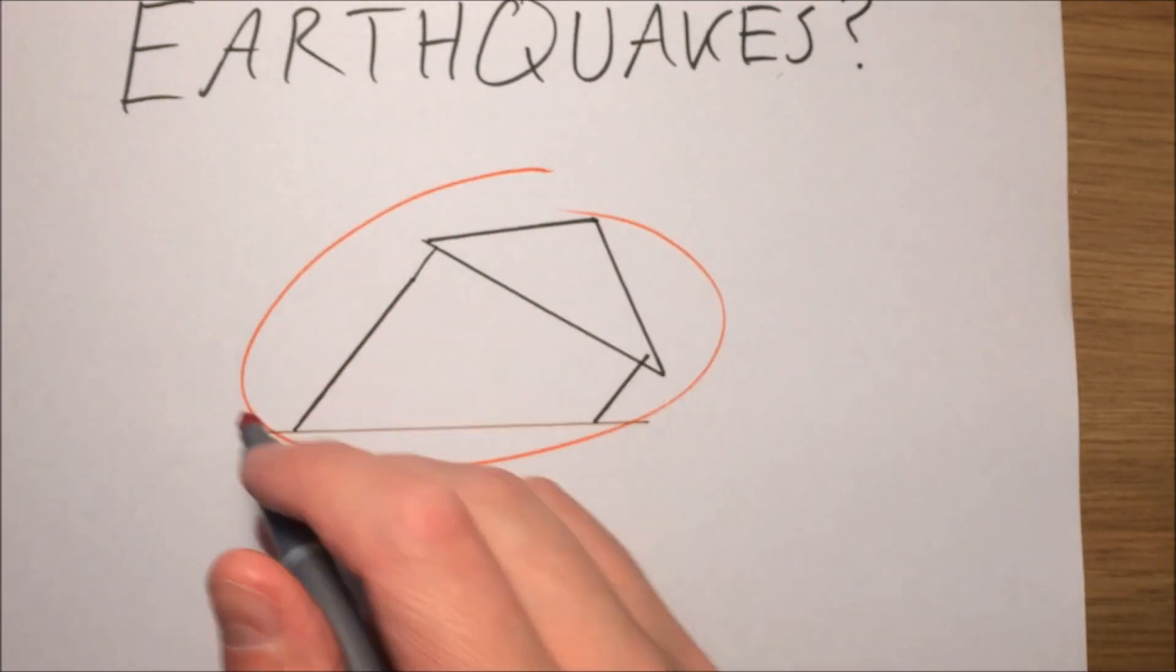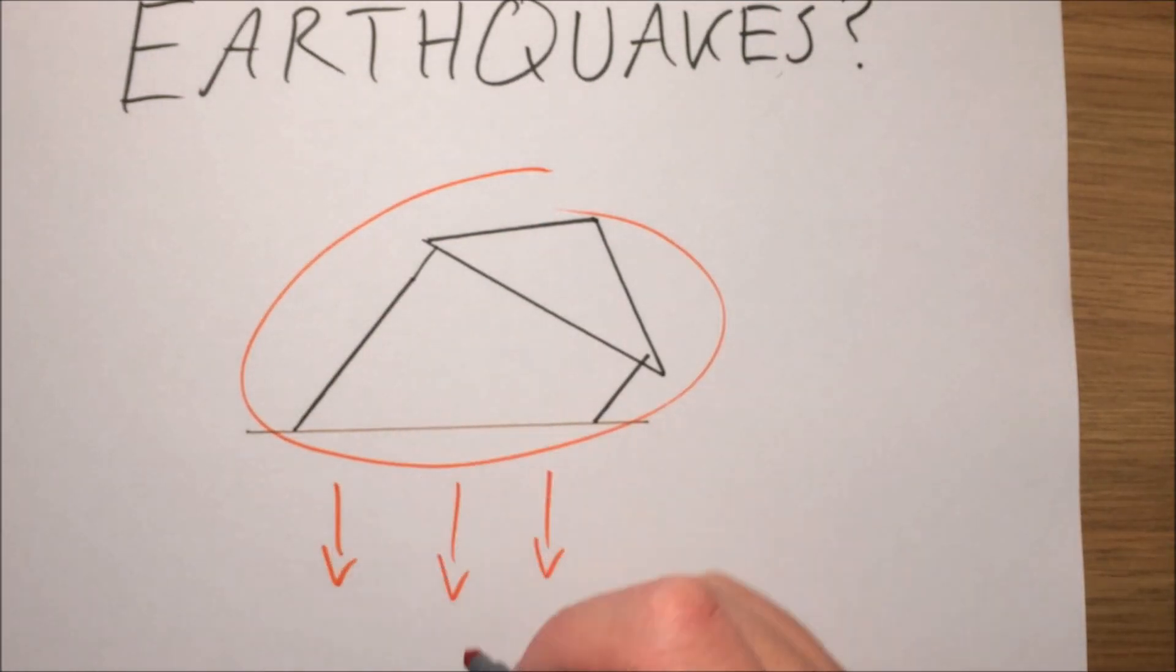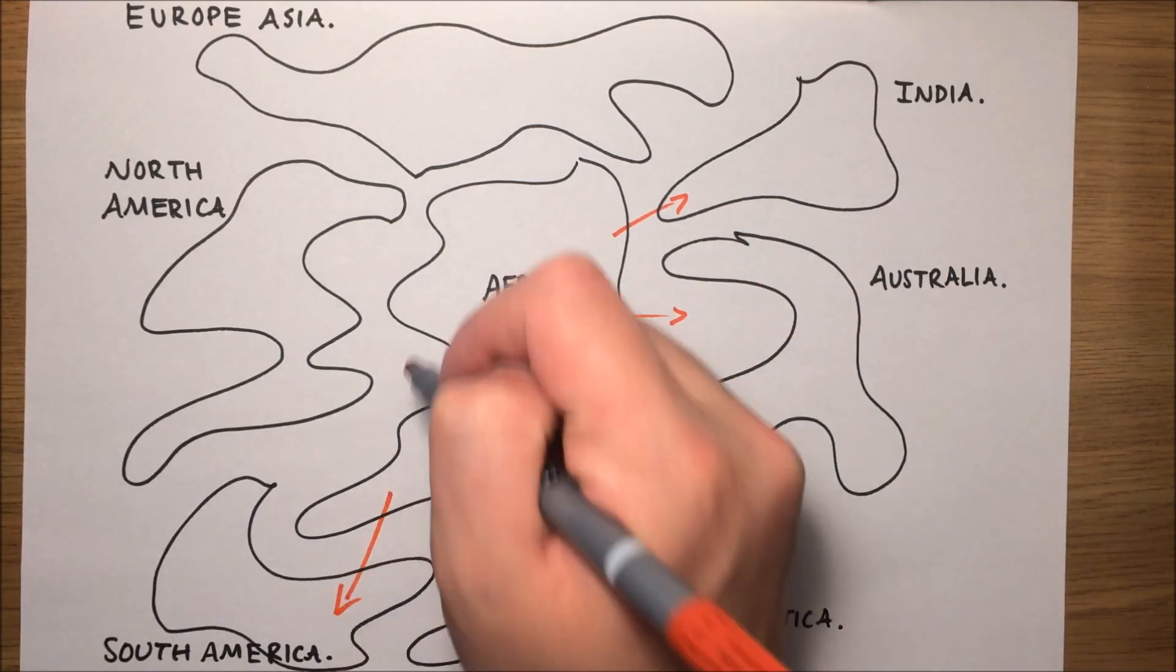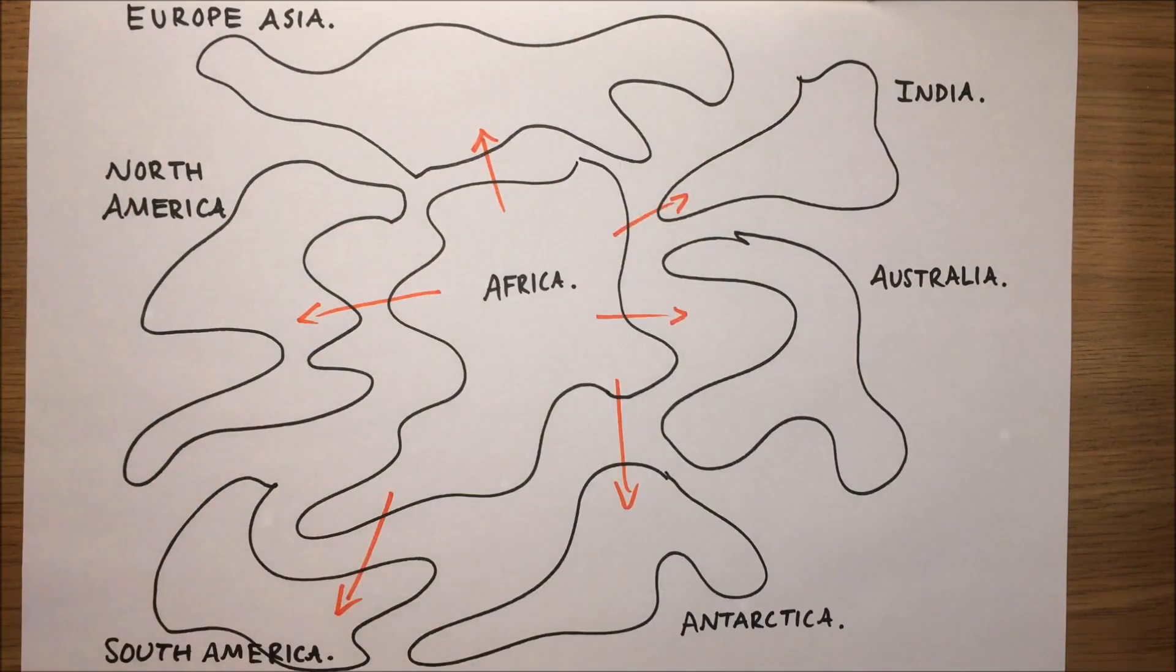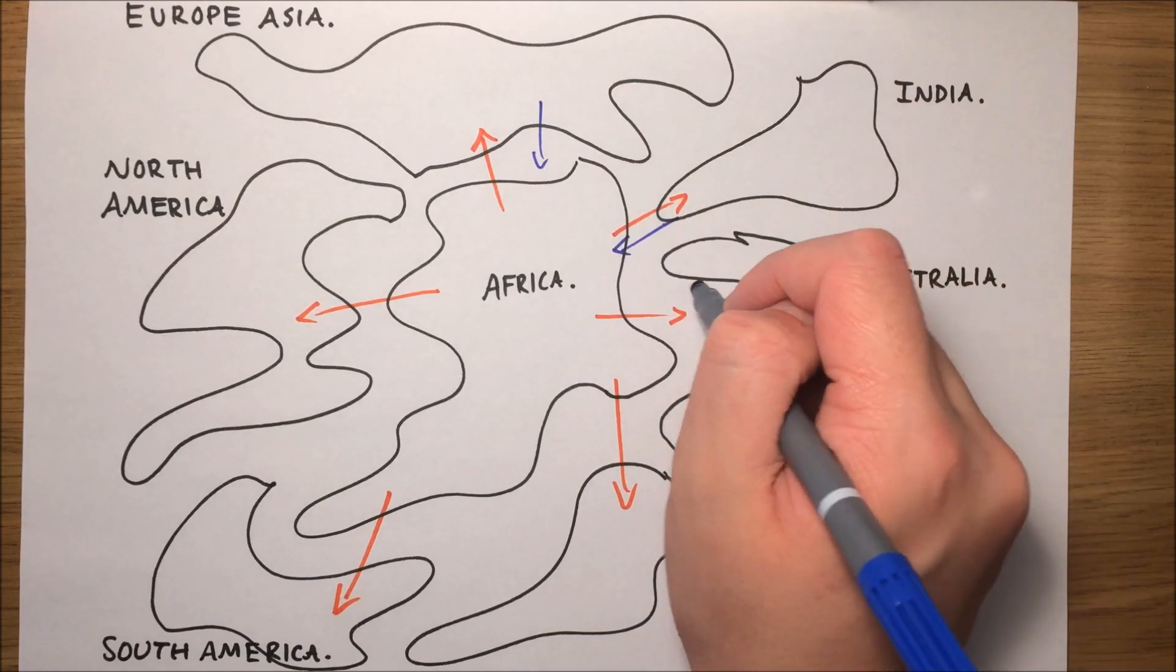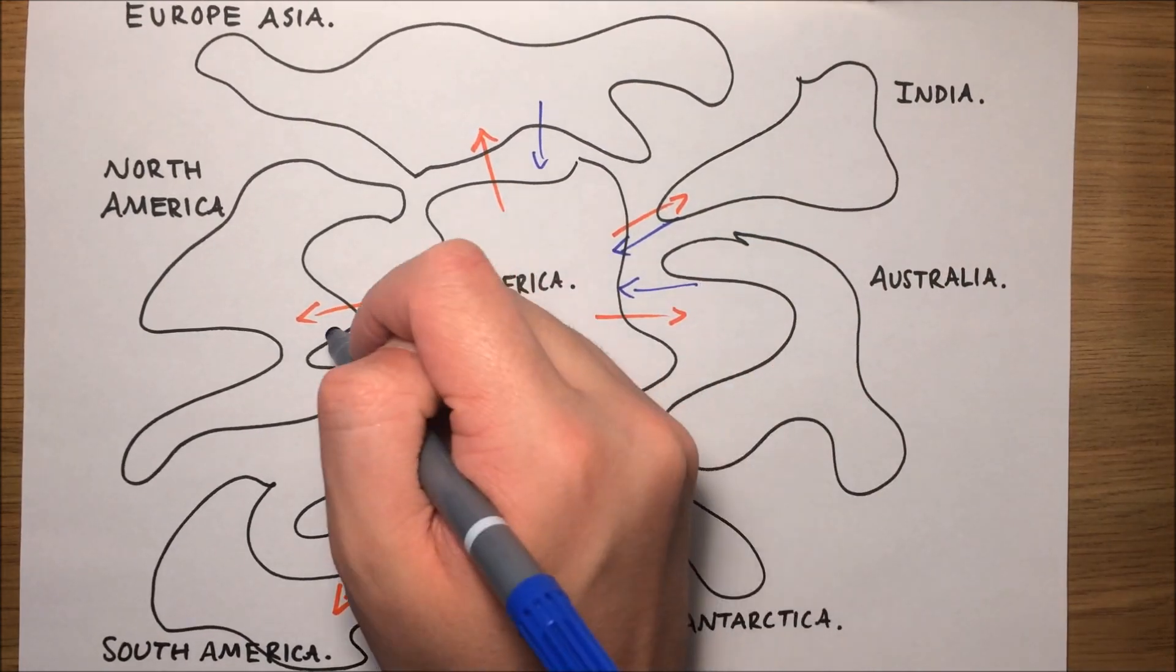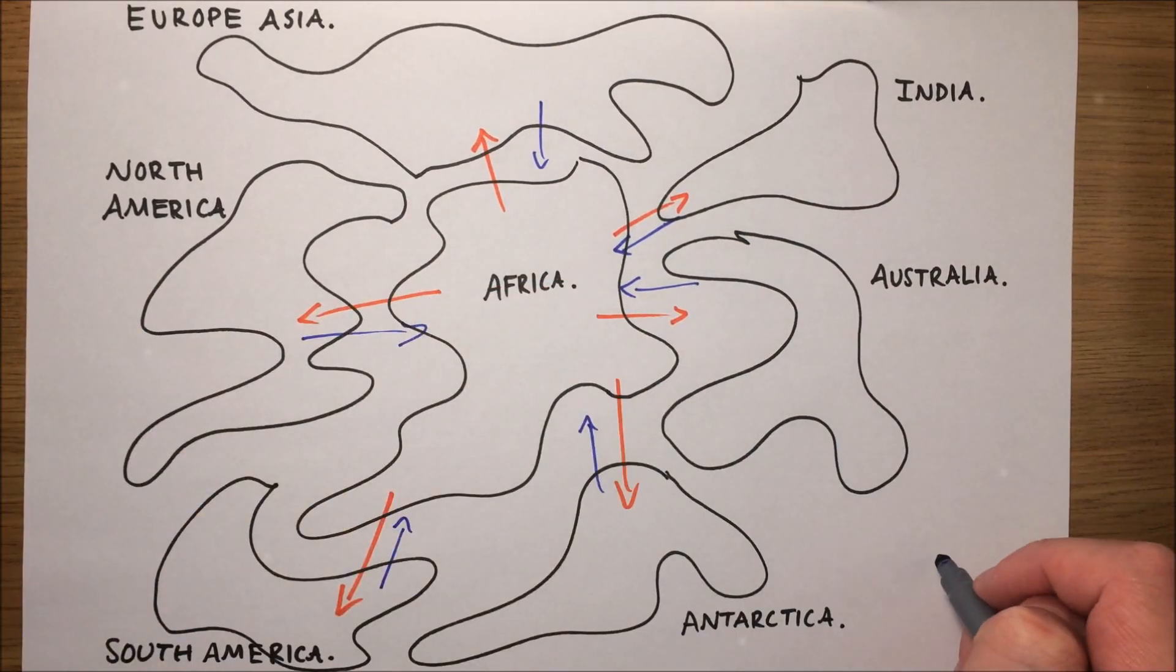The idea that our planet is broken into sections called tectonic plates and the fact that these plates periodically move together and apart was a theory that was finally accepted by geologists in the 1960s.